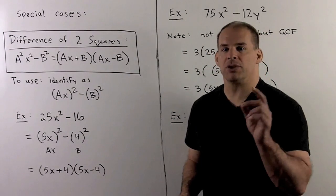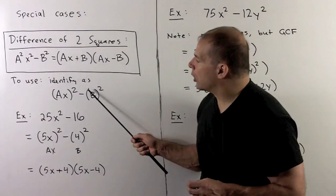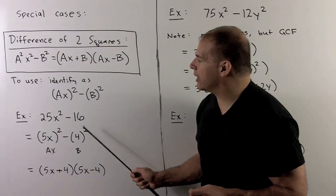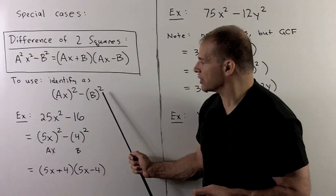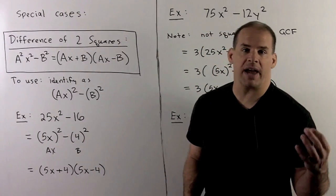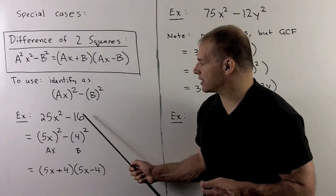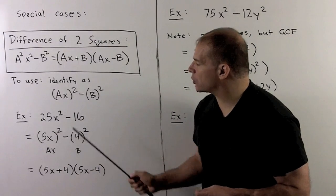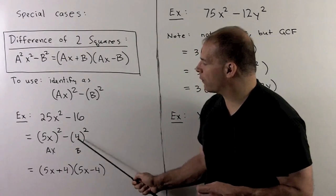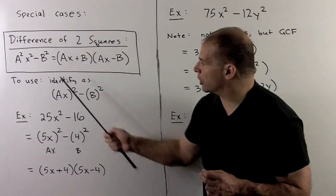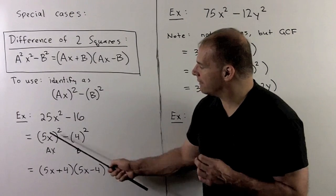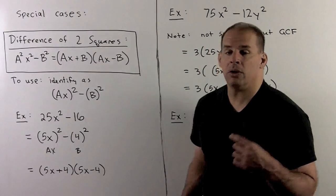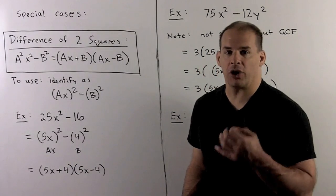When looking for a difference of two squares, we want no middle term, a minus sign, and squares on the ends. For instance, if I had 25x² minus 16, I could rewrite the first term as (5x)² and the second term as 4². Using our rule, I get (5x + 4)(5x − 4). You should FOIL that to check your answer.